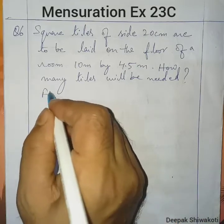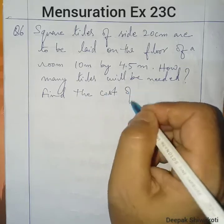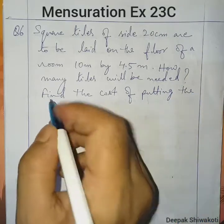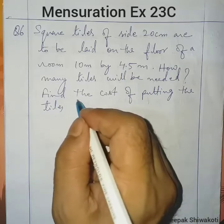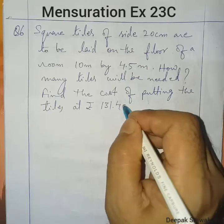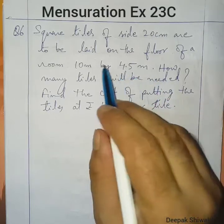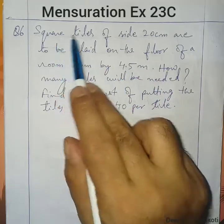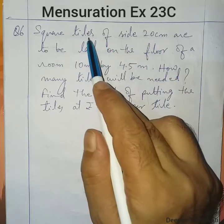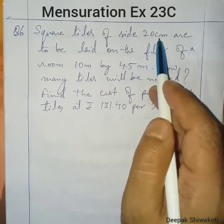Find the cost of putting the tiles at rupees 131.40 per tile. So, the given information is square tiles of side 20 cm. The square-shaped tiles have a side of 20 cm length, which means it's a square, so all sides are 20 cm.